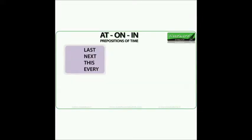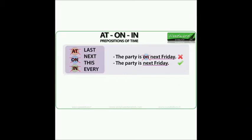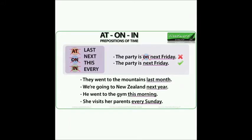Last, next, this, every — we do not use a preposition before these words. So we don't say 'the party is on next Friday'; we say 'the party is next Friday'. You can say 'the party is on Friday', but without using 'next'. More examples: They went to the mountains last month. We're going to New Zealand next year. He went to the gym this morning. She visits her parents every Sunday.